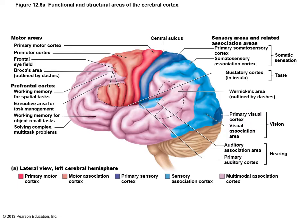Looking at another view of the brain, the precentral gyrus is the primary motor cortex connecting to skeletal muscles. Behind the central sulcus in the parietal lobe, the postcentral gyrus handles sensory input. Also visible are the gustatory area, visual cortex, auditory areas, and association areas.